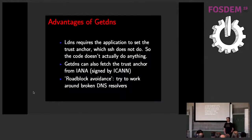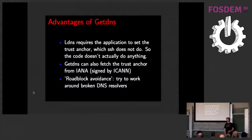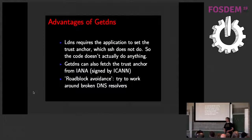Fortunately, GetDNS has a completely different approach — it should just work. You can set extensions like the roadblock avoidance feature. Around the time of the root key rollover, GetDNS also added the ability to directly fetch trust anchors itself from IANA, operated by ICANN. I always feel a bit uneasy about it — you go to a website, get some stuff, and there's a certificate signing it. But at the same time, you have to trust ICANN anyway because they operate the root.